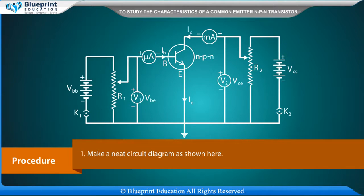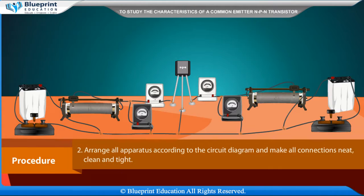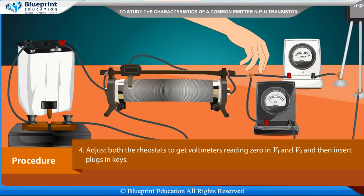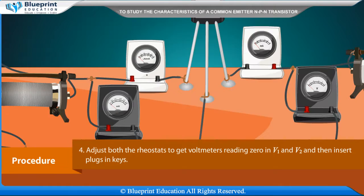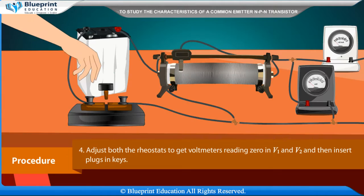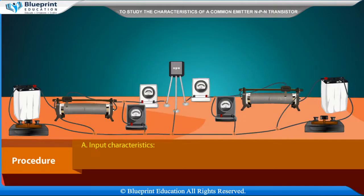Procedure: Make a neat circuit diagram as shown. Arrange all apparatus according to the circuit diagram and make all connections neat, clean and tight. Note down the least count and zero error of voltmeters and ammeters. Adjust both rheostats to get voltmeter readings zero in V1 and V2, then insert plugs and keys.